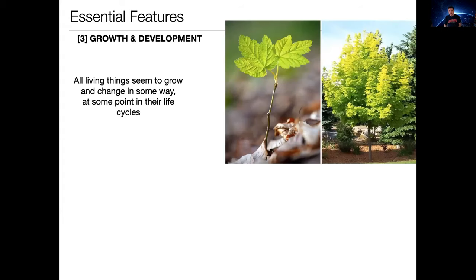The third category we talked about is growth and development. All living things that we've encountered on Earth seem to grow and change in some way. At some point in their life cycles, they're initially small and then they grow into something bigger, or they're initially one way and they grow and change into something different. That's true in every life system that we've seen on Earth. A classic example here is a maple tree. You got a little maple sapling there, and eventually it grows into a big maple tree.